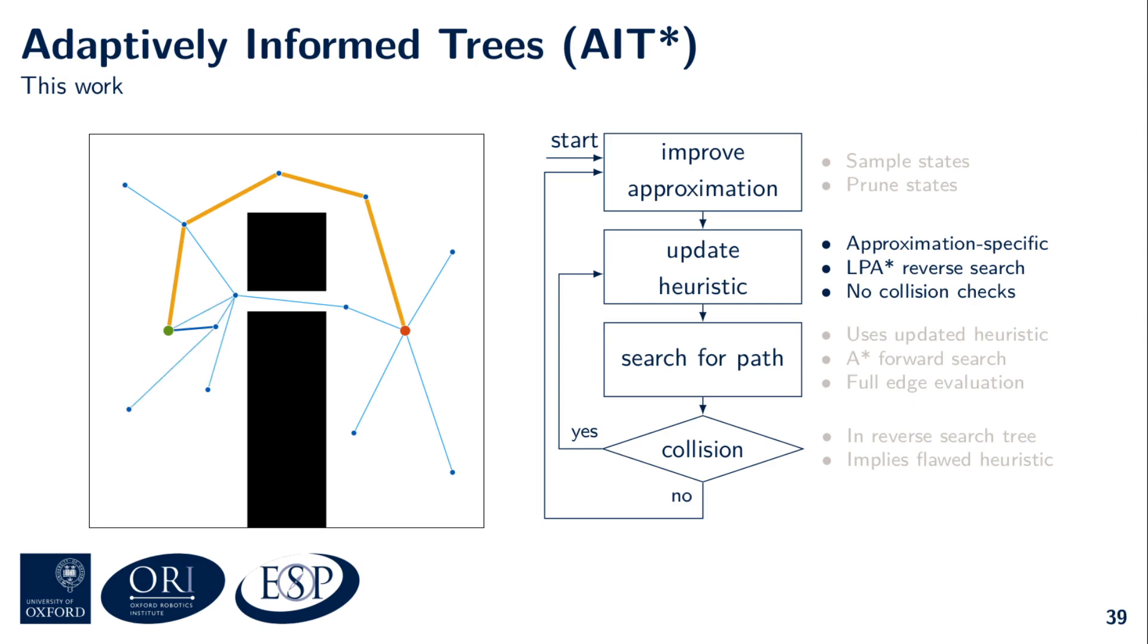Once the heuristic is updated, AIT* continues its search for a better collision-free path. Because this time no collision was detected, AIT* has now again found the resolution-optimal path on the improved approximation. This way, AIT* can run indefinitely and will almost surely converge towards the globally optimal solution.